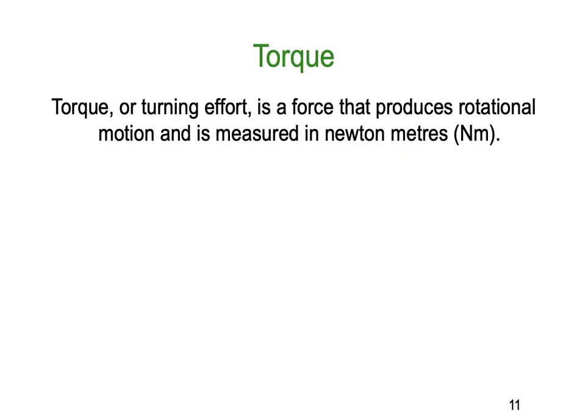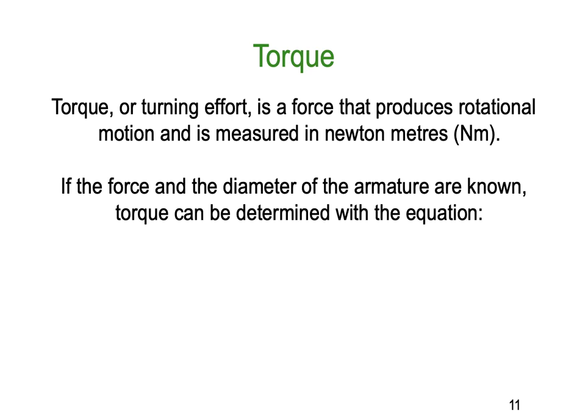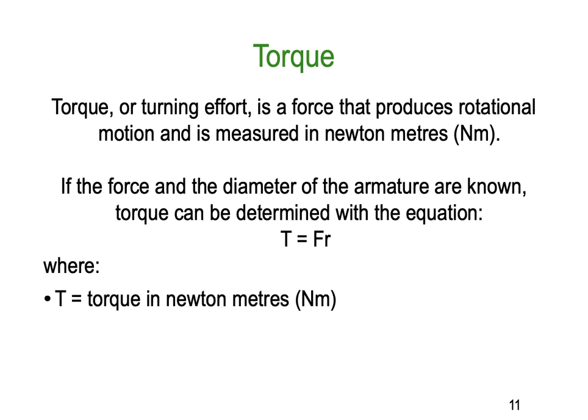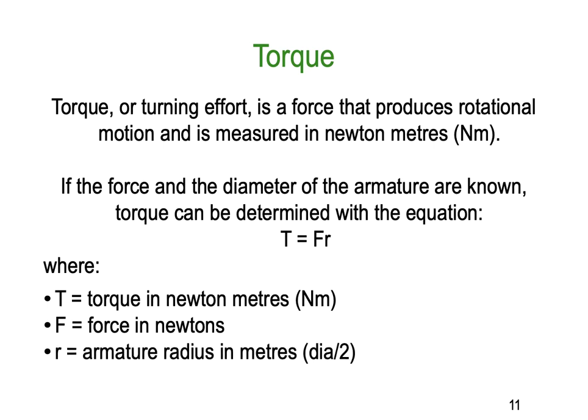Torque, or turning effort, is a force that produces rotational motion and is measured in newton metres — how much force per metre. If the force and the diameter of the armature are known, torque can be determined with the simple equation T = F × r, where torque is in newton metres, F is force in newtons, and r is the armature radius, which is the diameter divided by 2.